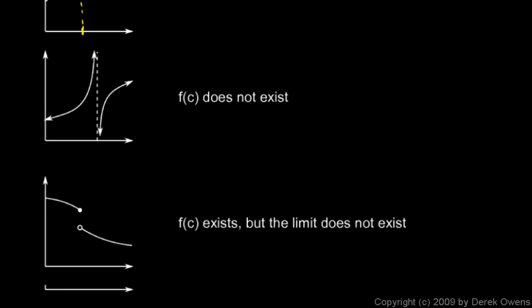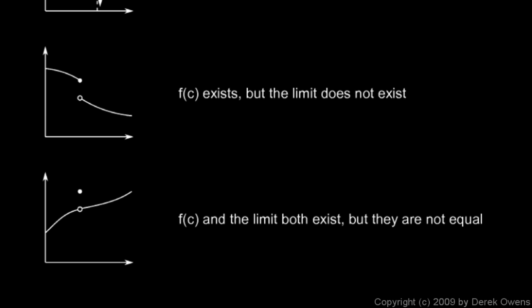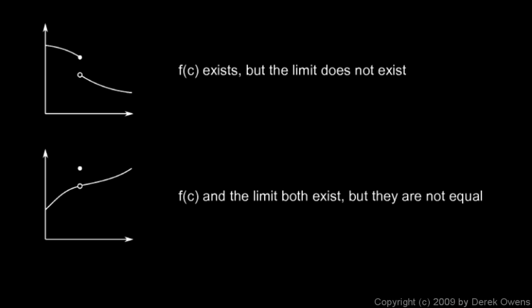Now in this picture, let's look at this x value — we'll call it c. Note that f(c) exists; there is a particular y value there. But the limit does not exist. The left-sided limit exists and the right-sided limit exists, but they are not equal. There isn't a particular value that the function approaches as we get close to this x value — we approach different values from different sides. So the limit does not exist, and therefore the function is not continuous.